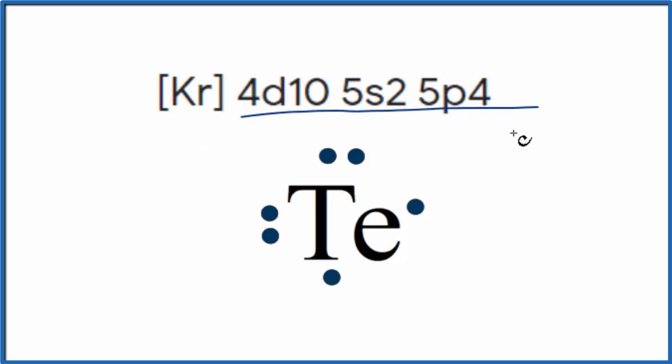This 4D, though, D is full with 10, so this is very stable. So the only electrons that are going to be available to form bonds, these guys right here. And you can see we have 2 plus 4, that gives us 6. 6 valence electrons around Te here. So that's the Lewis structure for Te and Te 2-.